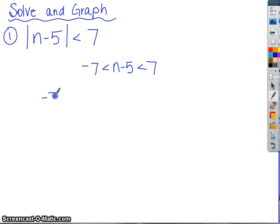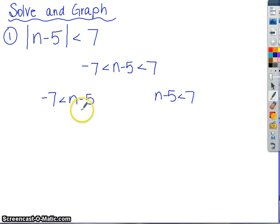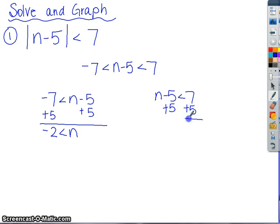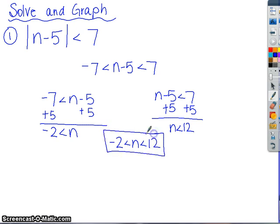To solve this, I'm going to break it up into the two separate pieces and then solve them each separately. For this one, I'm going to add 5 and get negative 2 less than n. For this one, I'm going to add 5 and get n less than 12. Then for my final solution, I'm going to sandwich it back together to make one inequality. Smaller number on the left, larger number on the right — inequalities are both open to the right.